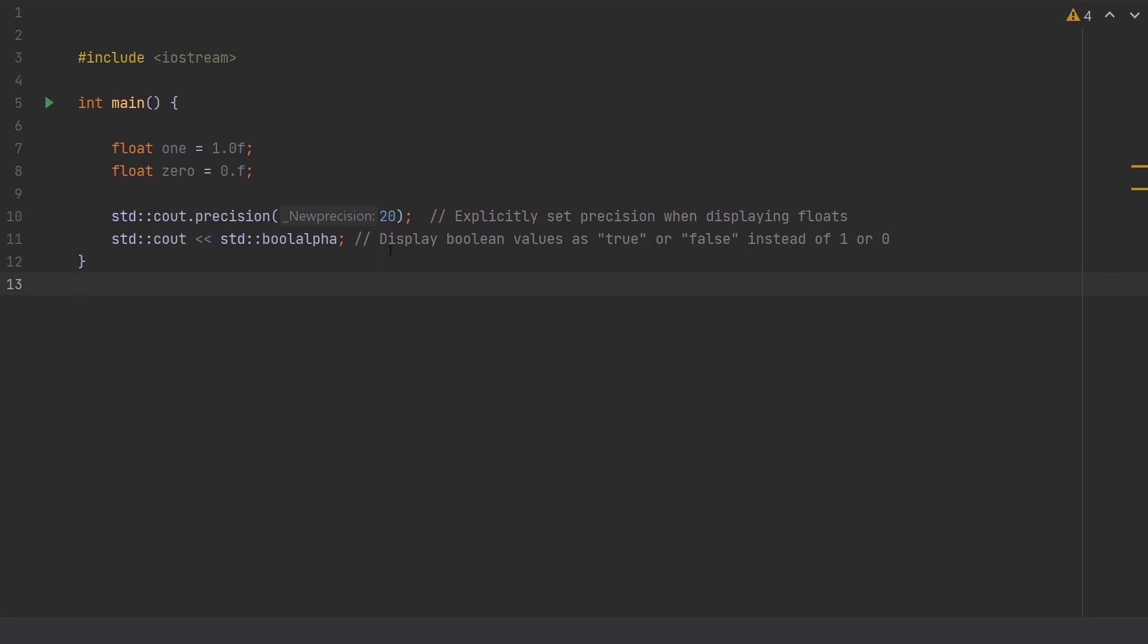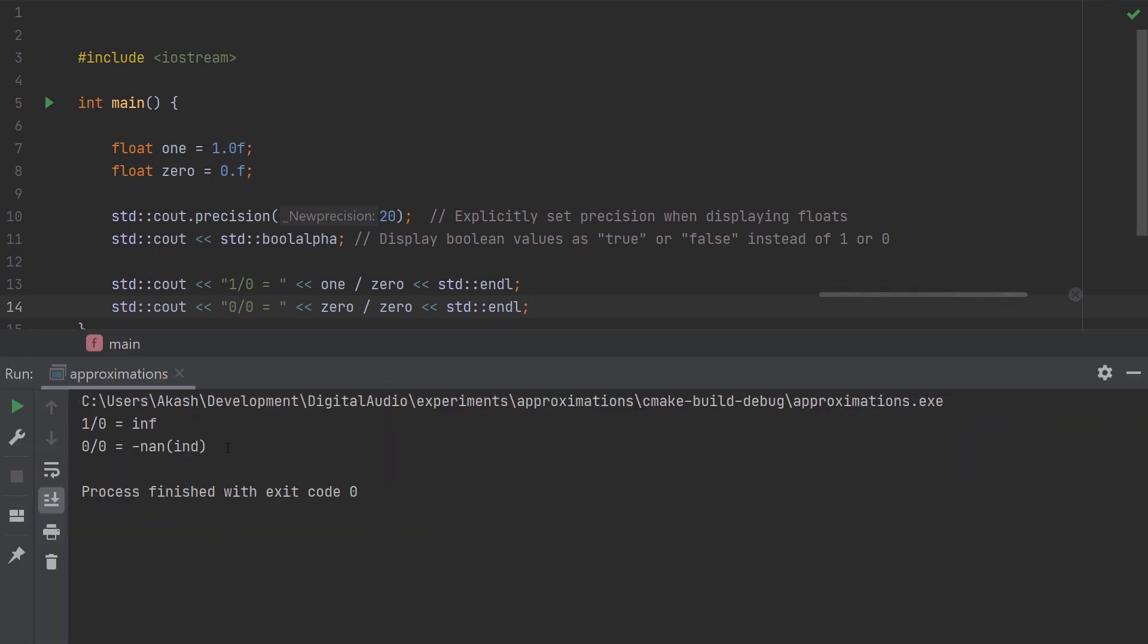So I've got variables 1 and 0 here, set to the floating point 1 and 0. Let's look at a non-zero number divided by 0 and a 0 divided by 0. The result of 1 divided by 0 is infinity like we discussed, and the result of 0 divided by 0 is this weird representation, negative NaN and IND in brackets.